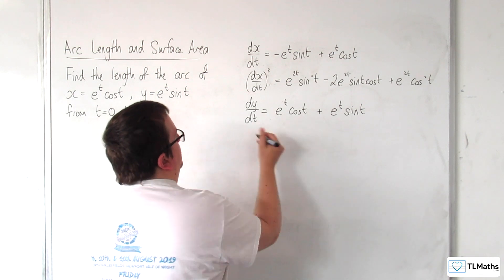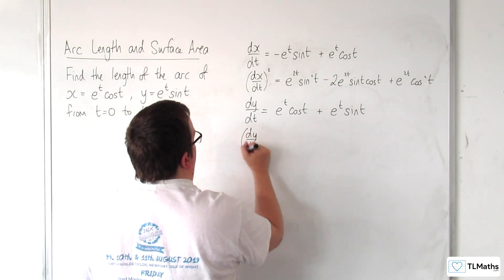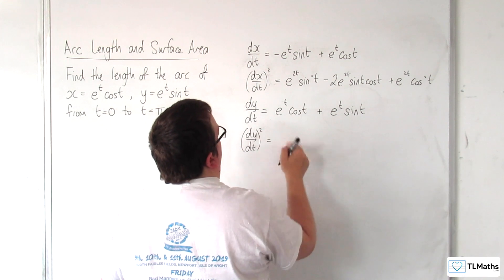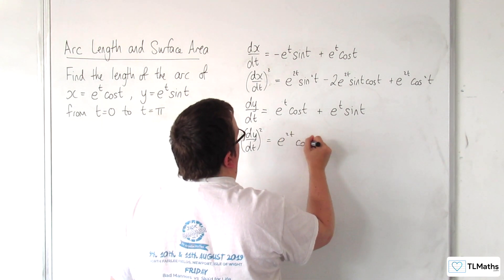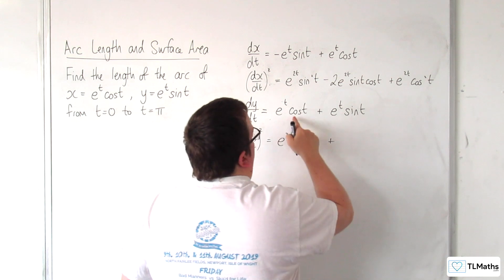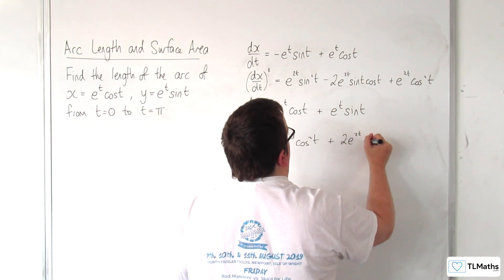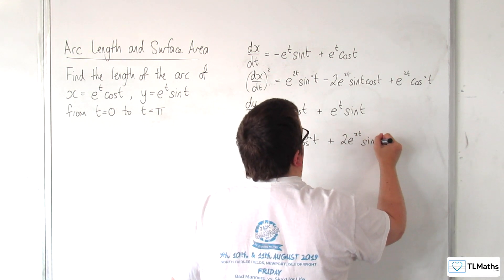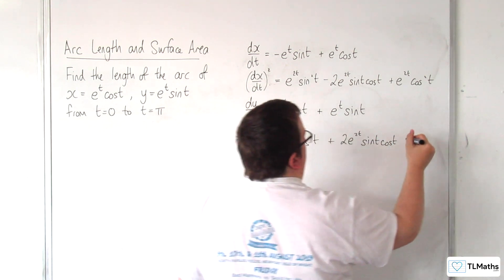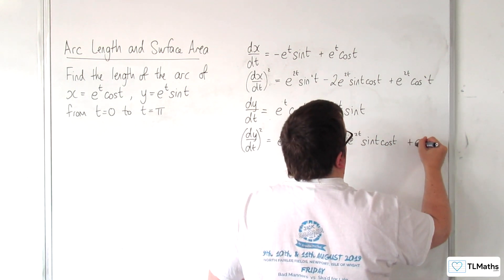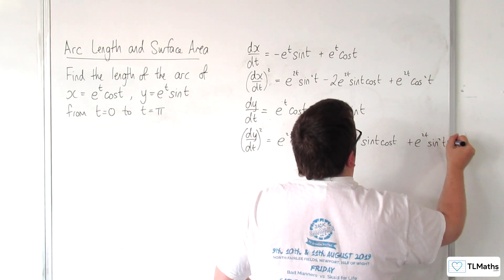We have to do the same for dy/dt squared. That gives e to the 2t cosine squared t, plus 2e to the 2t sine t cosine t, and then plus e to the 2t sine squared t.